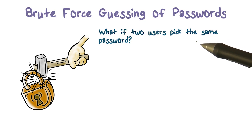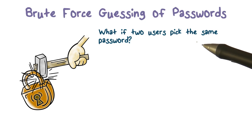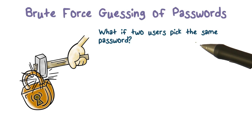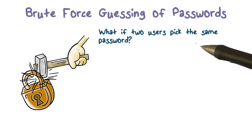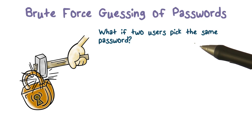How do we avoid this problem? In one of the quiz questions, we said: what would happen if the hash value was the same? If two users have the same password, they'll have the same hash value. And by looking at the hash values, we can see that from one person's password, we can log in as the other user.